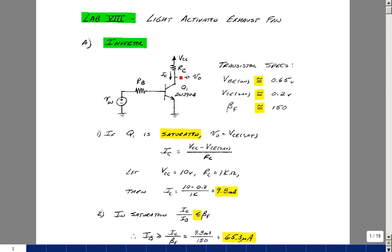Let's calculate the value of I sub c. It's going to be this node voltage minus this node voltage divided by R sub c. But the output voltage will equal VCE SAT for saturated, so we have this expression for the collector current.